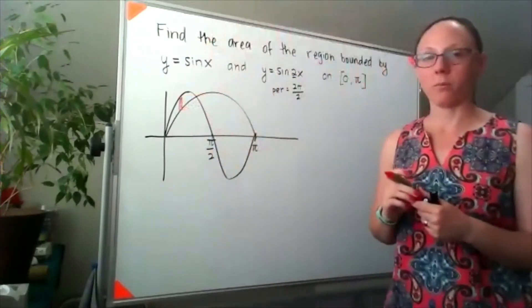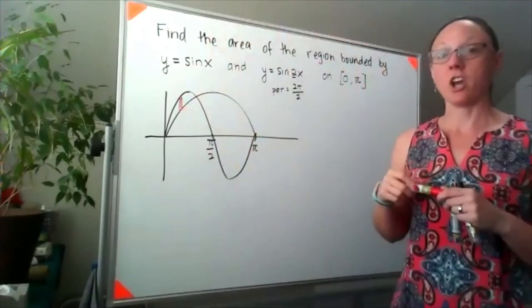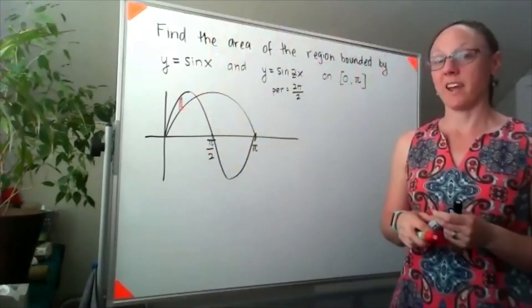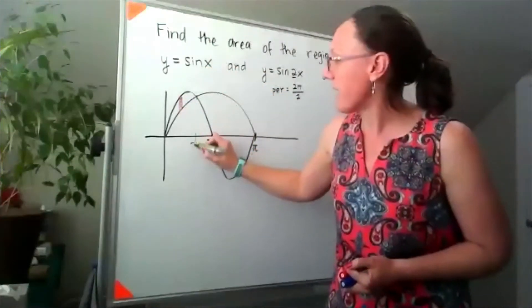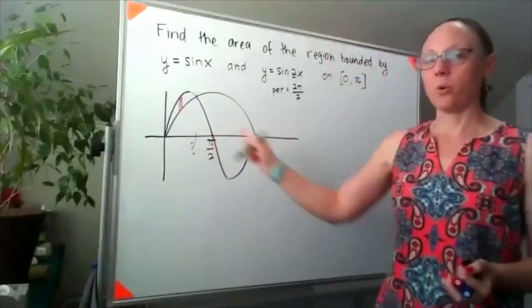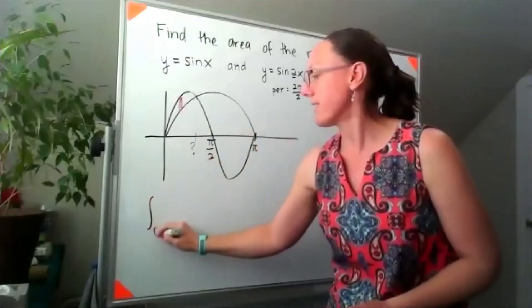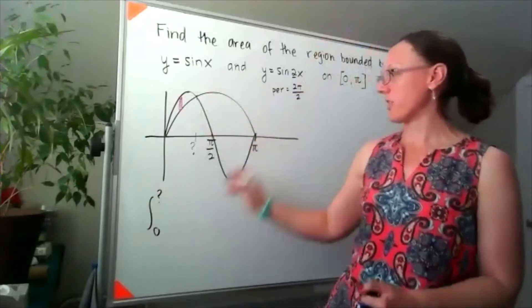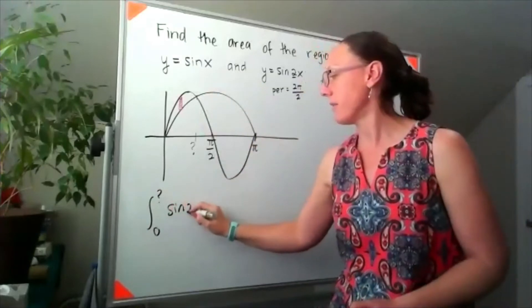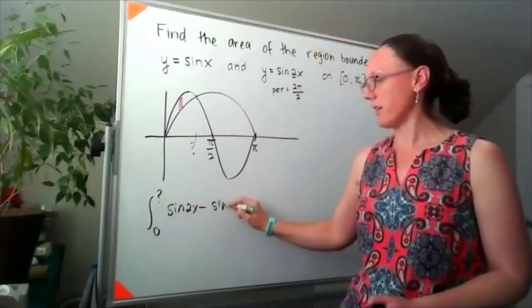If I draw my arbitrary cross-section in that top function is y equals sine of 2x. So although I don't know what this value is yet, I know that between 0 and whatever that value is, my top function is sine of 2x and my bottom function is sine of x.